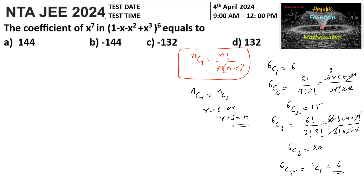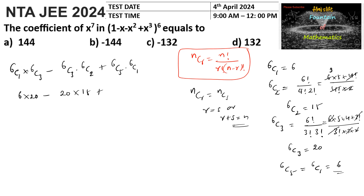So our calculation becomes: 6C1 times 6C3 minus 6C3 times 6C2 plus 6C5 times 6C1, which is (6×20) minus (20×15) plus (6×6) equals 120 minus 300 plus 36 equals 156 minus 300 equals minus 144. So the answer is minus 144, which is option B.